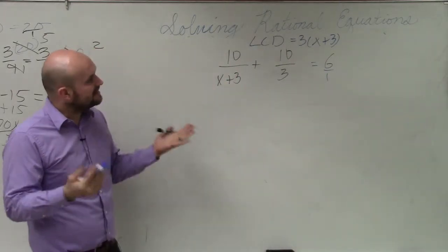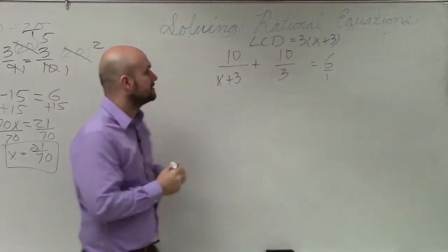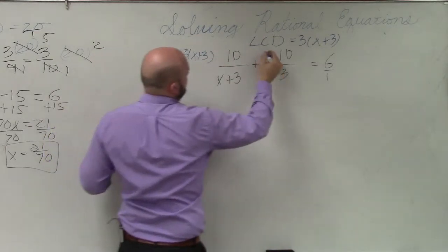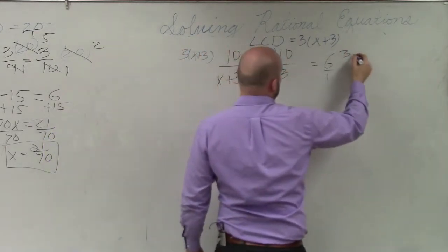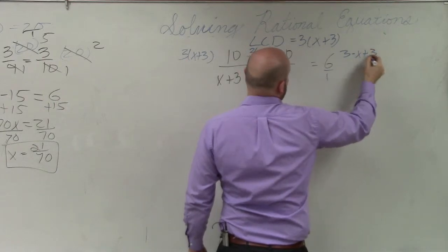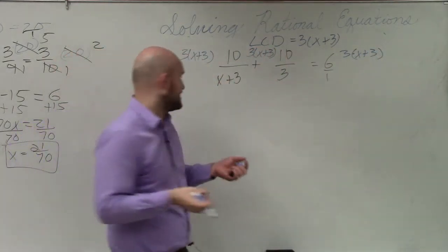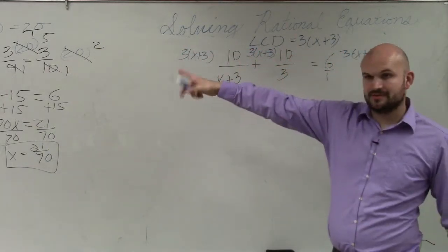So now what we do is we take that LCD and we multiply it times every single term. So I have 3 times x plus 3, 3 times x plus 3, and 3 times x plus 3. You guys see how I multiply that common denominator times everything just like I did over there? It's the same thing.